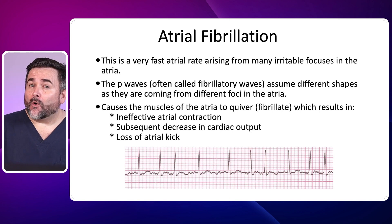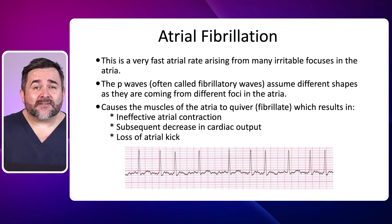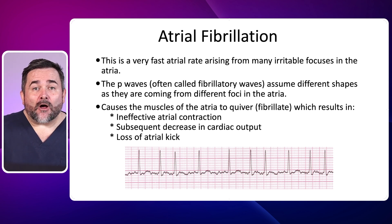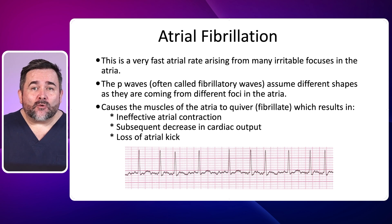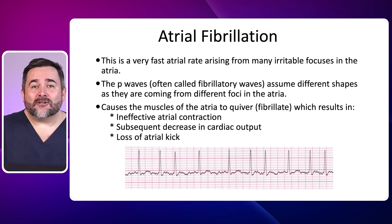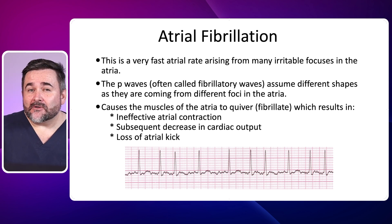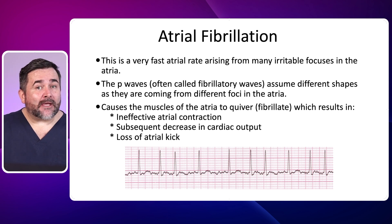Atrial fibrillation, or AF, is the rhythm that we see regularly in practice. This is a very fast atrial rate arising from many irritable foci all over the atria. The fibrillatory waves assume different shapes as they are coming from different foci in the atria, which causes the muscles of the atria to quiver or fibrillate, resulting in ineffective atrial contraction, subsequent decrease in cardiac output, and loss of atrial kick. Some of the causes of atrial fibrillation can include ischemic heart disease, valvular disease, alcohol misuse, sick sinus syndrome, post cardiac surgery, and chronic pulmonary disease, to mention a few.